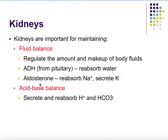Aldosterone is another hormone that influences renal fluid by turning on the sodium-potassium pump. By reabsorbing sodium back into the blood, water will follow. The kidneys are also important in balancing our acid-base. When we are too acidic, our kidneys will reabsorb bicarbonate ion and secrete hydrogen ion. If we are too alkaline, it will reabsorb hydrogen and secrete bicarb — essentially doing exactly what we need to restore our pH.